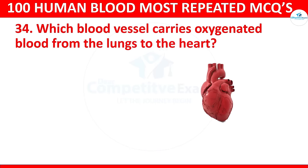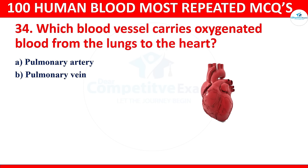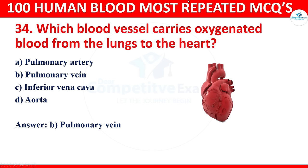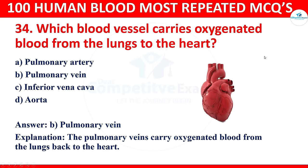Question 34: Which blood vessel carries oxygenated blood from the lungs to the heart? Options: pulmonary artery, pulmonary vein, inferior vena cava, or aorta. The correct answer is the pulmonary vein. The pulmonary veins carry oxygenated blood from the lungs back to the heart.